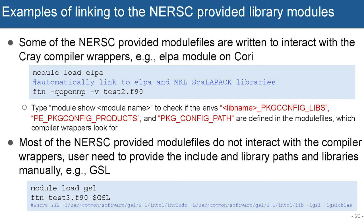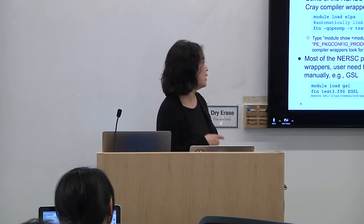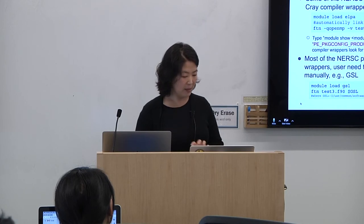Some NERSC-provided library modules follow the Cray convention and interact with the wrappers, so you don't have to manually handle the library linking — for example, ALPS. The way to tell if a NERSC module can do this automatically is to look at 'module show module_name' output and look for PKG_CONFIG_PATH and the three environment variables shown in red. If they are defined, those modules interact with the Cray wrappers and you don't have to handle them in your compile link line.